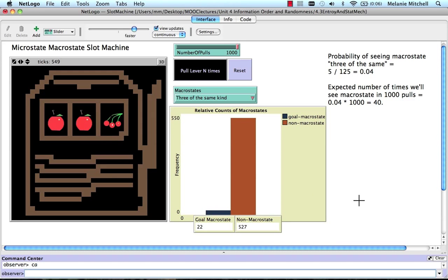So we can see the jackpot. But you can see that here's our number of times it's seen the goal macrostate, three of the same kind. And here's the number of times it's seen the non-macrostate. So this is like the win macrostate and the lose macrostate. And so we're experimentally going to verify our theory, which says that we'll see it about 40 times.